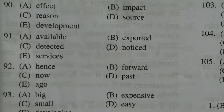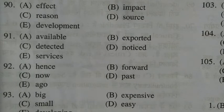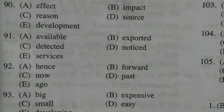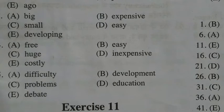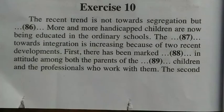The answer to question 93 is C: many of these new aids are 'small.' The answer to question 94 is 'inexpensive': many of these aids are small and inexpensive. The answer to question 95 is B: during the past few years there has been considerable 'development' in this area.